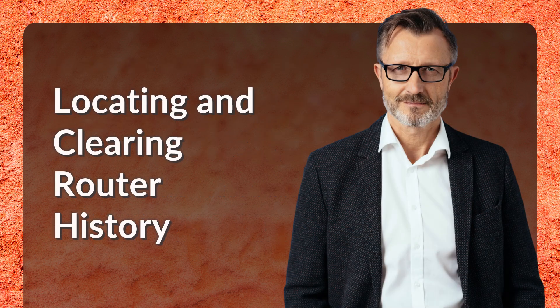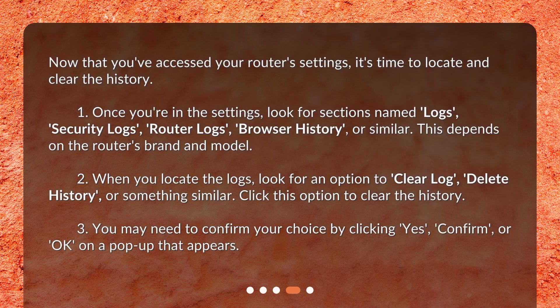Locating and clearing router history. Now that you've accessed your router's settings, it's time to locate and clear the history. Once you're in the settings, look for sections named logs, security logs, router logs, browser history, or similar. This depends on the router's brand and model.